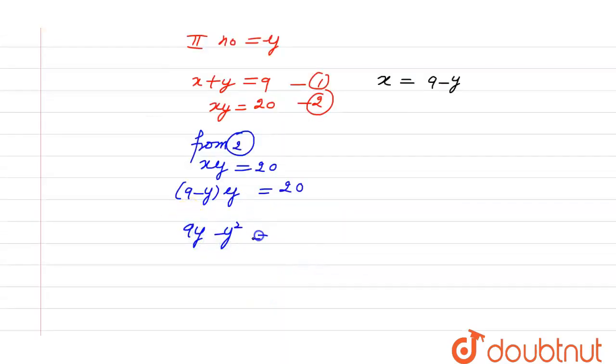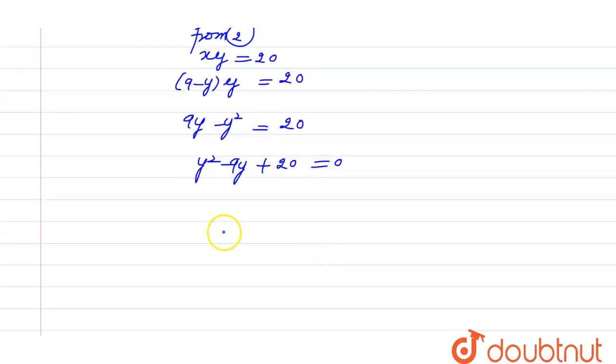y square minus 9y plus 20 is equal to 0. So now we can make the factors of this, so factors are 5 and 4. So now we can take y common from it: y minus 5, 4 y minus 5 is equal to 0, means y minus 4, y minus 5 is equal to 0.